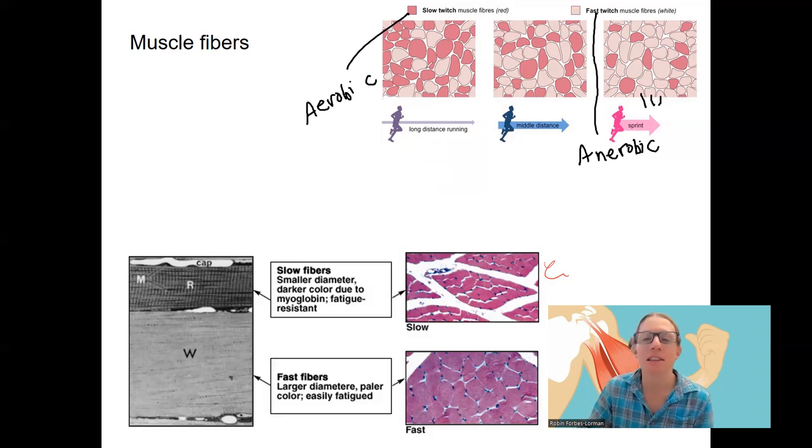And the other part about this is that these can be conditioned. So you actually can, with distance exercise, you will increase the number of slow twitch aerobic fibers that you have. And with a lot of sprinting in a given muscle, you will increase the proportion of white anaerobic muscle fibers you'll have. So a long distance runner is going to have more aerobic slow oxidative fibers than a sprinter is. So that is a plastic thing that can be changed as you use your muscles.